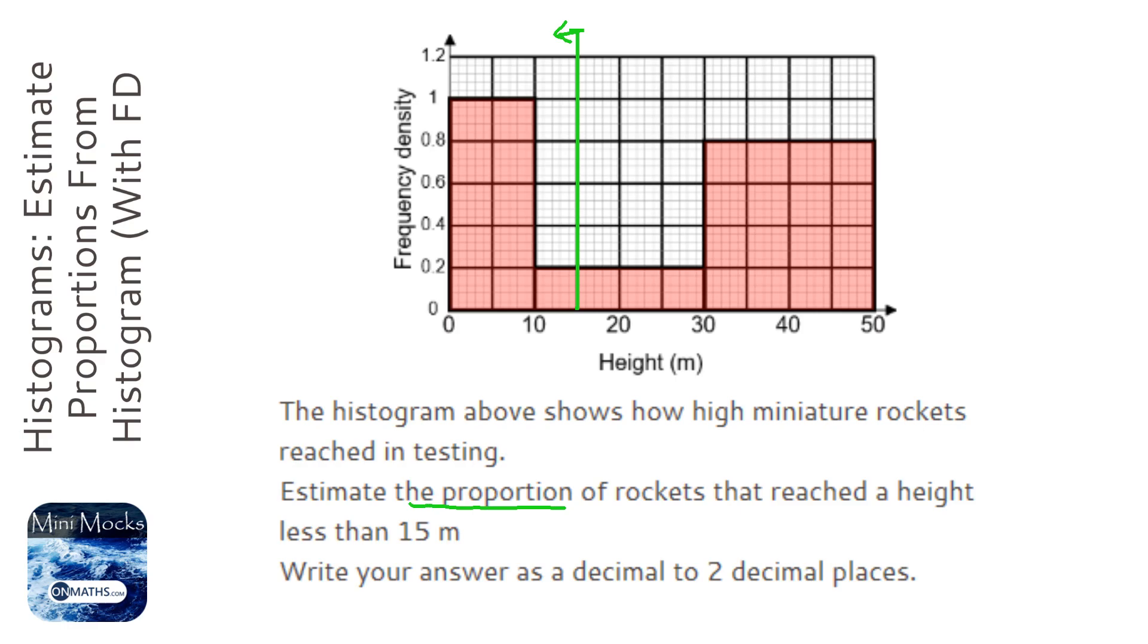So on the left hand side we've got one, two, three, four, five, six, seven, eight, nine, ten, eleven squares.